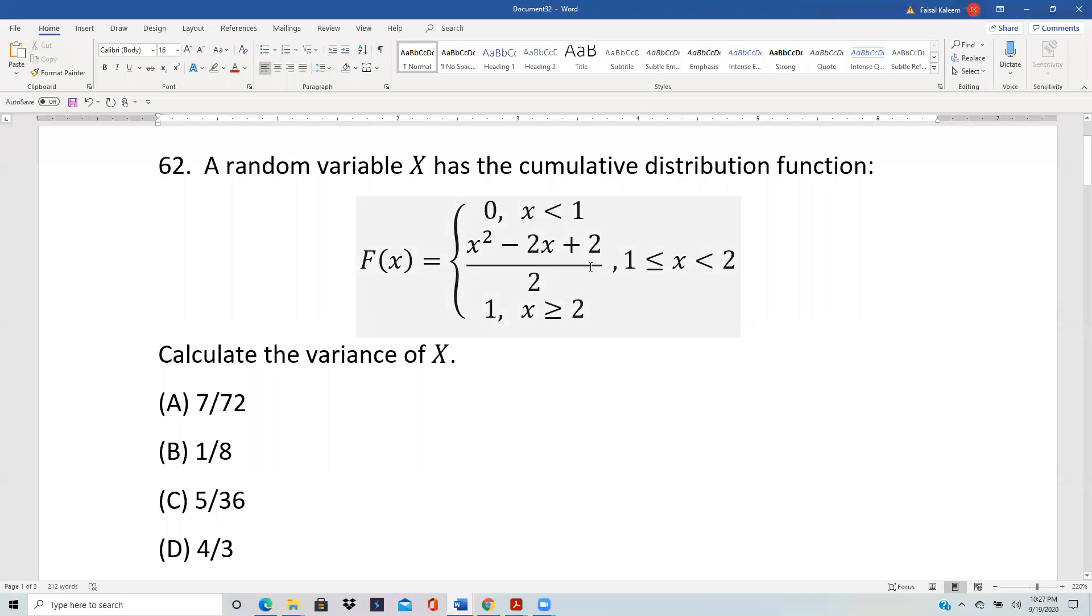Now we're okay as we go from this half to this half because F(2) is 1 and as we approach 2 from here we get (4 - 4 + 2)/2 which is also 1.